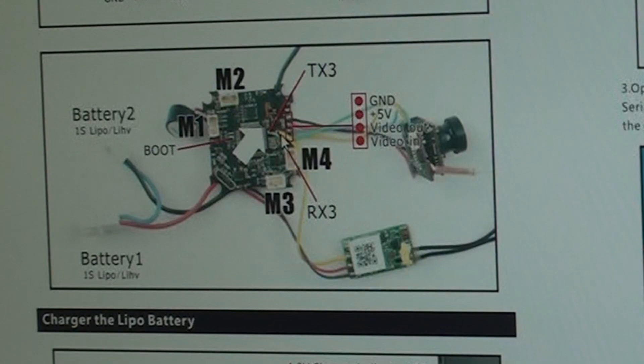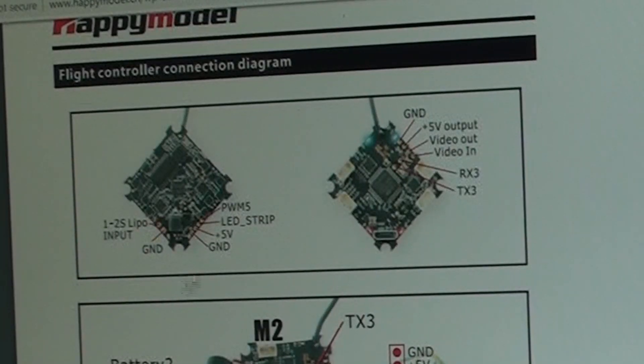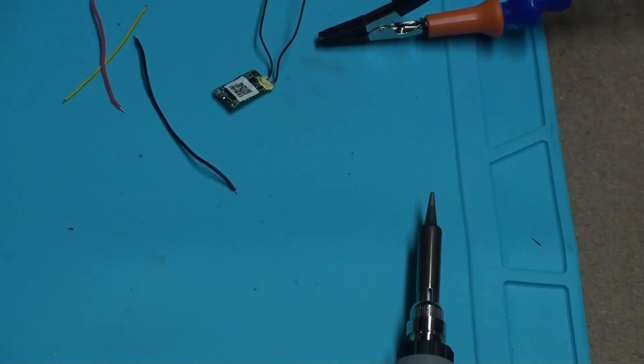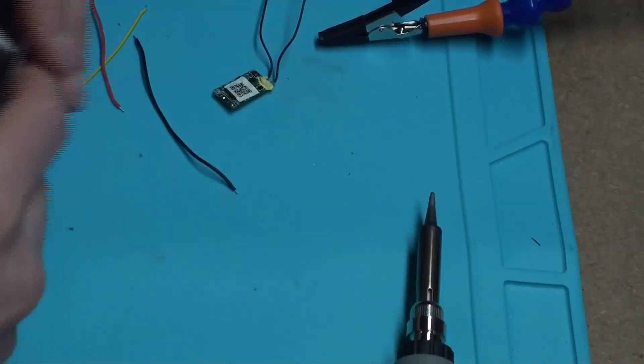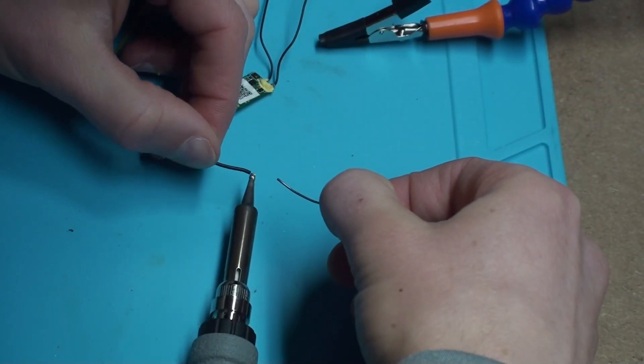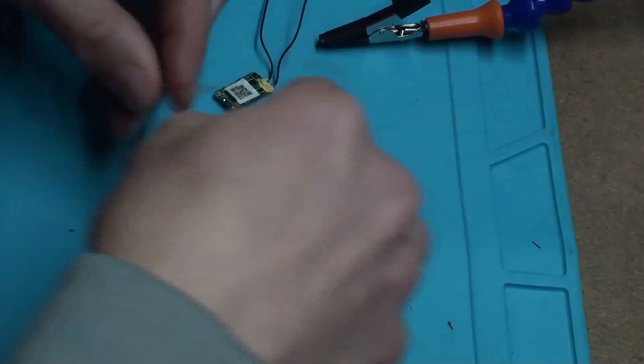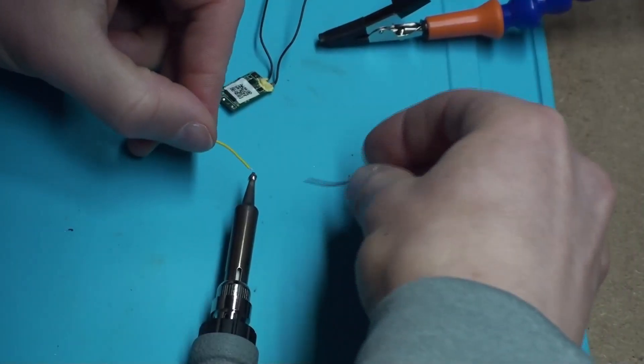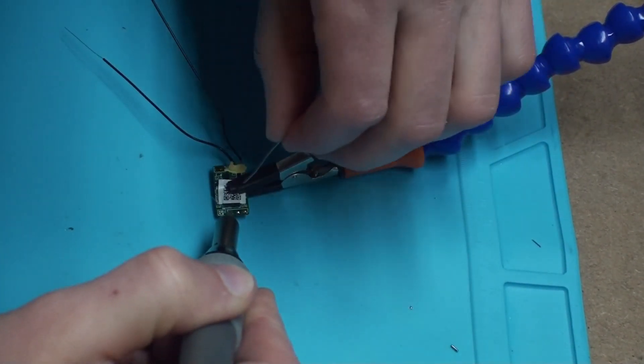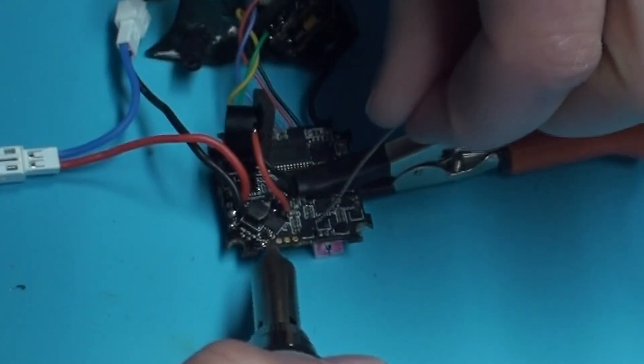I also want to get power for this receiver and I'm just going to use this ground and 5 volt. So let's go ahead and pre-tin some wires and pads here. 5 volt and ground.